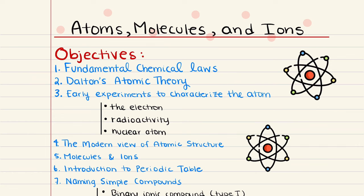In this chapter, we're going to cover the following objectives. First, we're going to start with a discussion on fundamental chemical laws. Here, we're going to define the law of conservation of mass, the law of definite proportions, and the law of multiple proportions. Next, we're going to learn about Dalton's atomic theory. In 1808, Dalton published a new system of chemical philosophy in which he presented his theory of atoms.